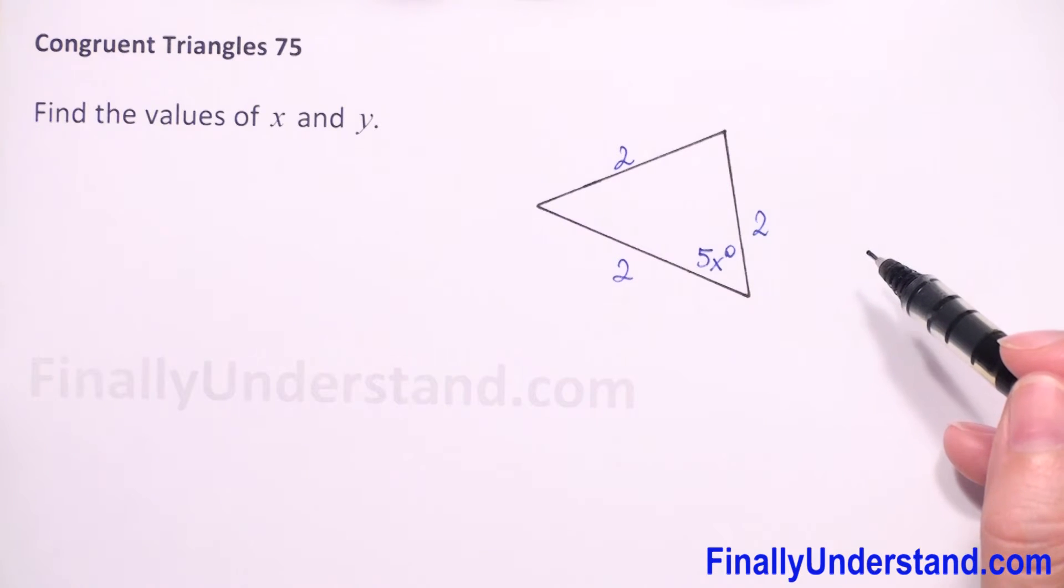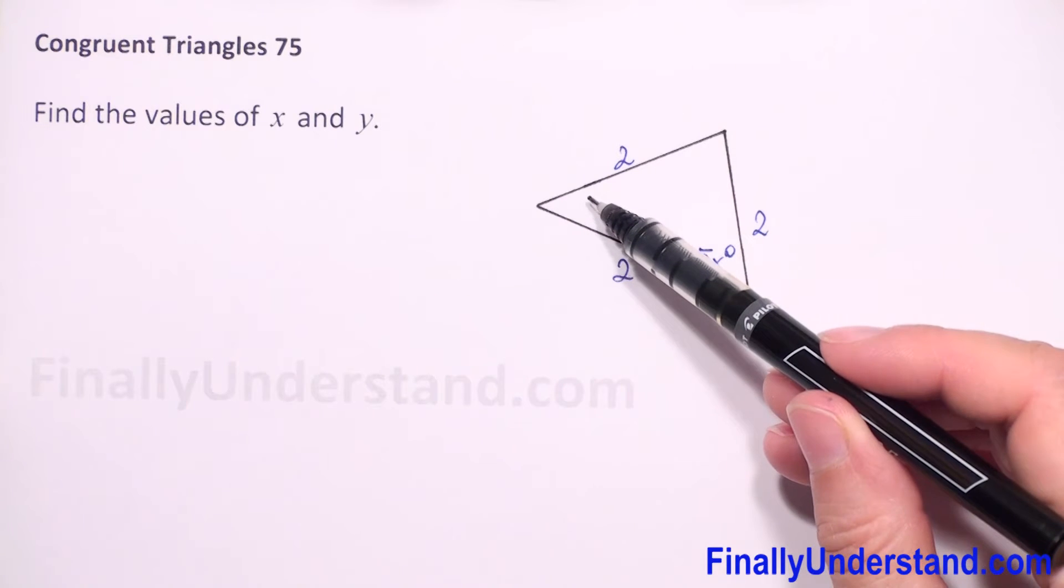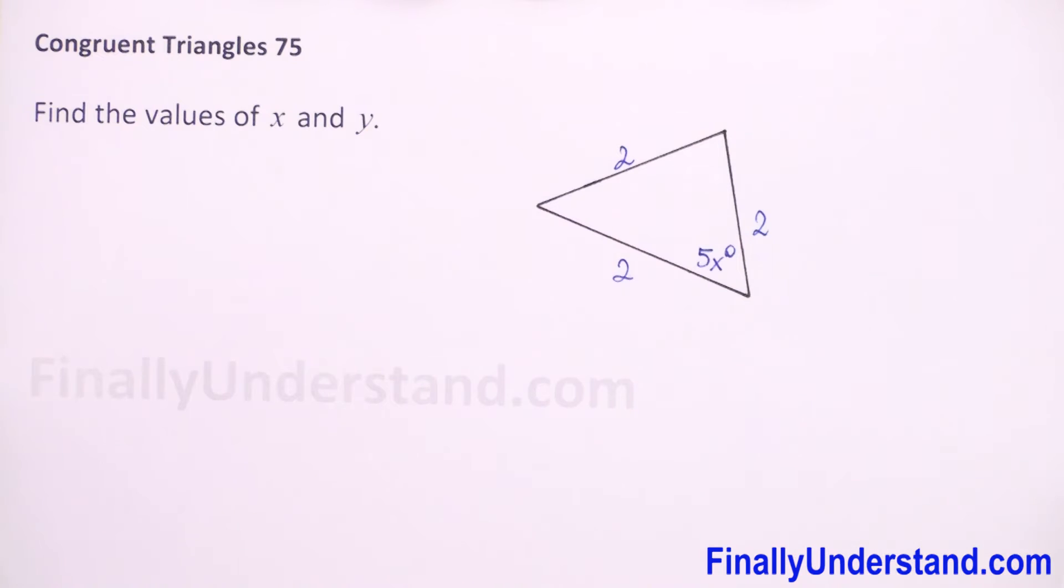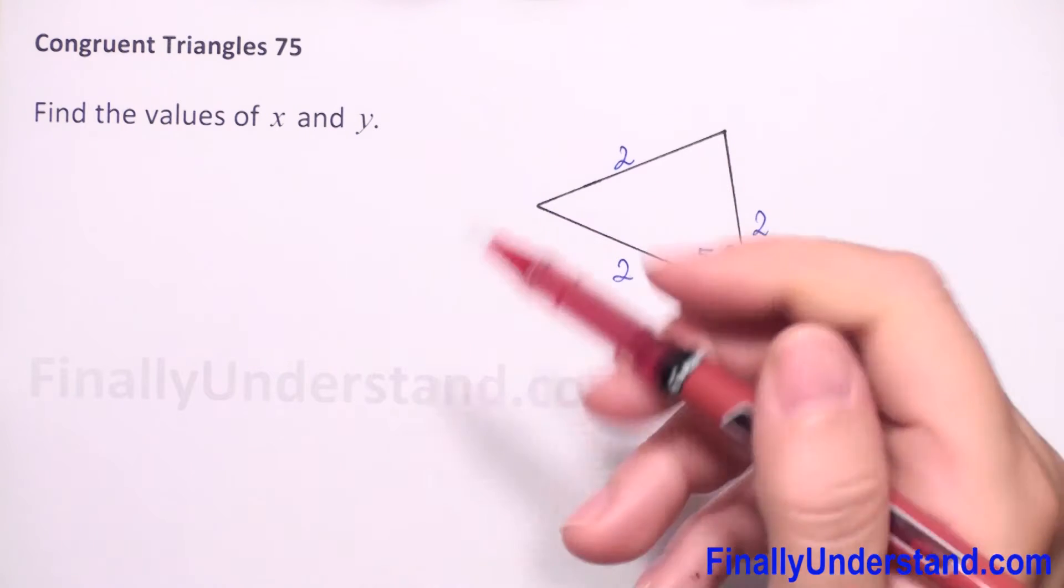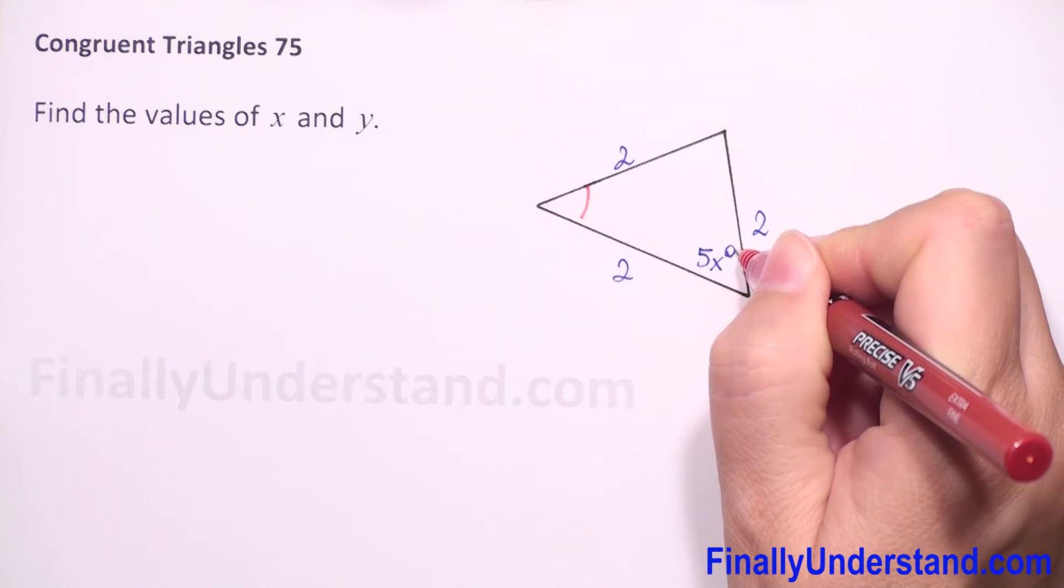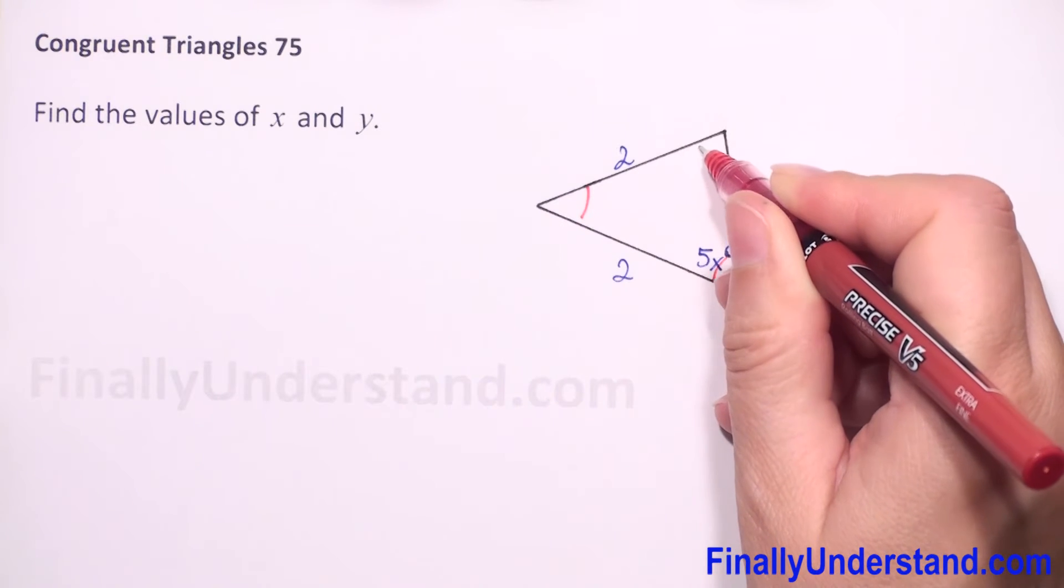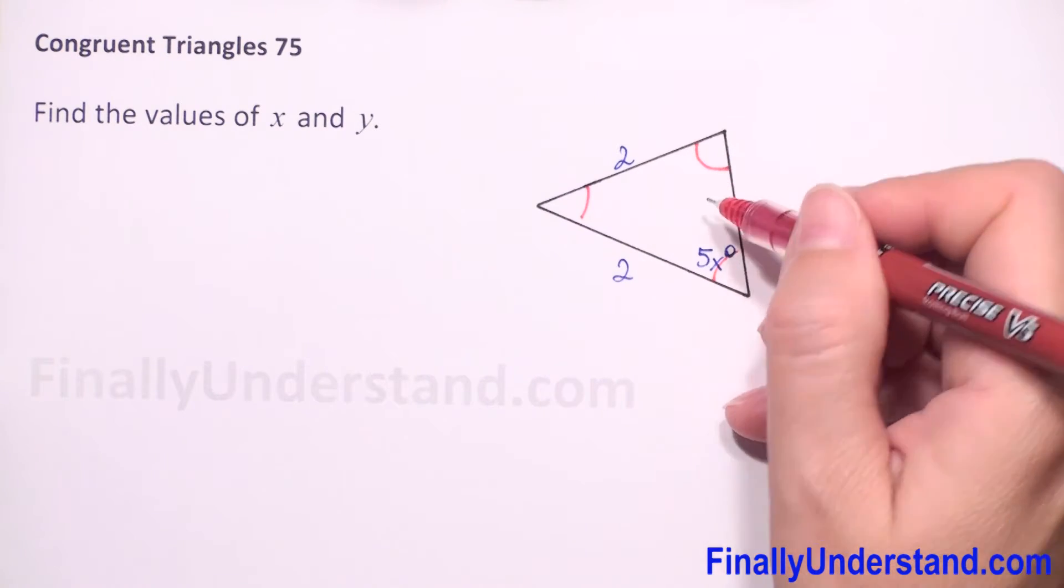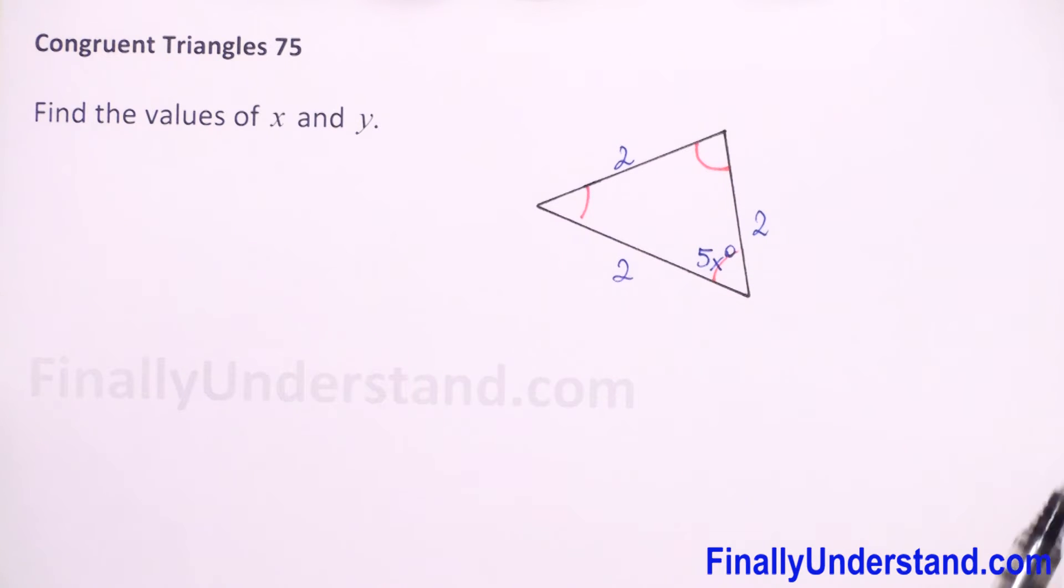So if the triangle is equilateral, then it is equiangular. It means that the measure of interior angles of our triangle is equal. Because this triangle is equiangular, it means that all angles in the interior of our triangle are congruent.